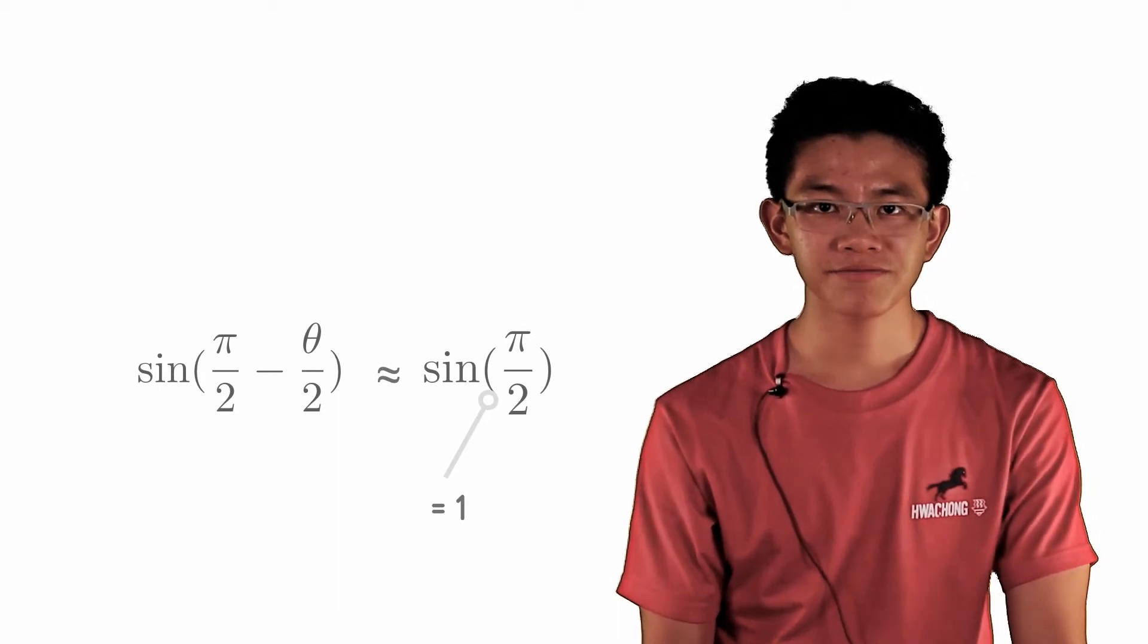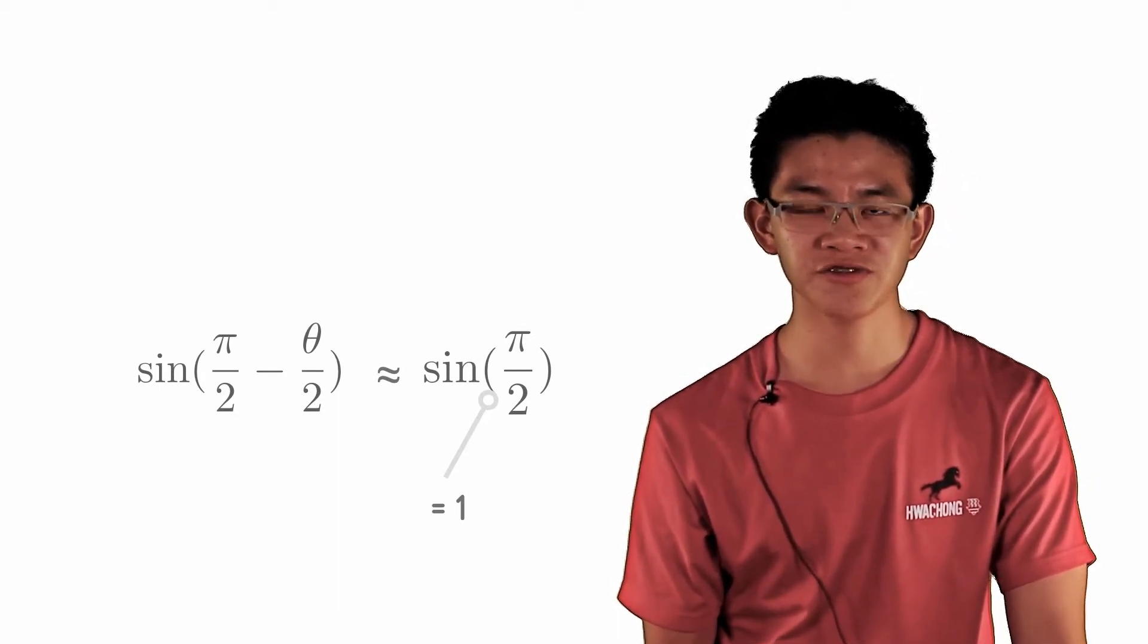And putting this all together, delta v over theta equals v, which implies that delta v equals v theta.